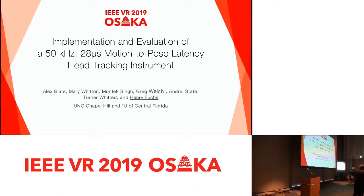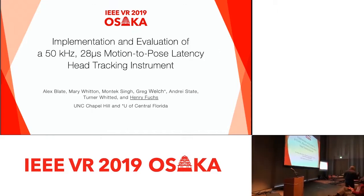Every week, almost the entire committee shows up for this. So if you don't want to read the paper, here are the results. This is a 6DOF optical tracker that runs at 50 kHz. Most people don't have trackers that work at 1 kHz or faster, so this is maybe 50 times faster.